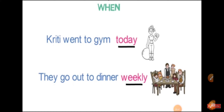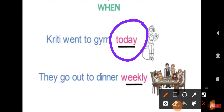Now let's see an example of when an action happened or occurred. Krithi went to gym today. We know that Krithi went to gym, but when? She went today. So here 'today' is an adverb. Another example: They go out to dinner weekly. So 'weekly' is an adverb here.